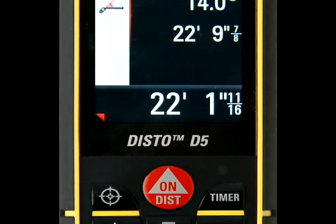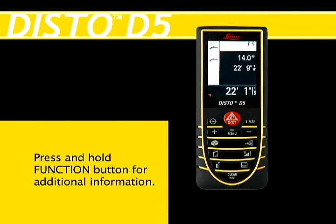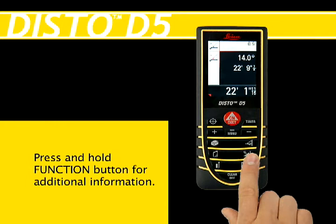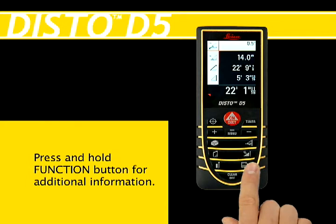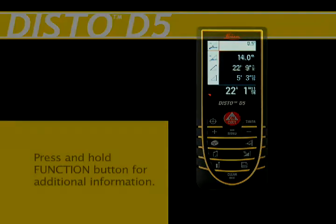Note: additional information can be calculated by pressing and holding the function button until it beeps. The information, along with the corresponding descriptive icon, will be displayed.